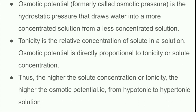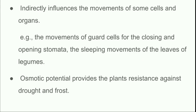The importance of osmosis in plants: it serves as the major mechanism of water absorption and brings about cell-to-cell movement of water within the plant body. It maintains the turgidity and shape of cells and organs. It indirectly influences the movement of guard cells for closing and opening of stomata, the sleeping movement of leaves and legumes, and osmotic potential provides plant resistance against drought and frost.